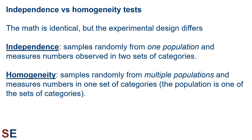So what's the difference between chi-squared tests of independence and homogeneity? The math is identical, but the experimental design differs. For tests of independence, samples are taken randomly from one population, and we measure the numbers observed in two sets of categories. No special effort is made to include members of each category — the population is just randomly sampled, and the numbers will indicate whether the two sets seem independent or not. In contrast, for tests of homogeneity, samples are randomly taken from multiple populations, and we measure the numbers in a set of categories for each population. We make sure to include plenty of members of each population, so the two sets are being treated a little differently.